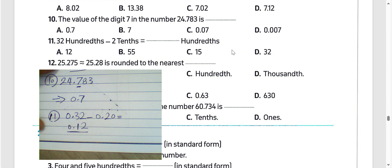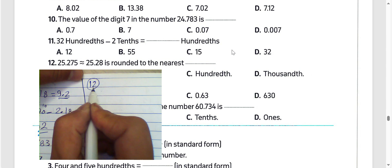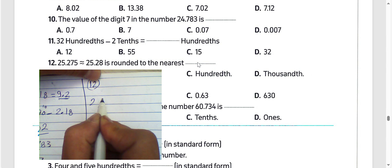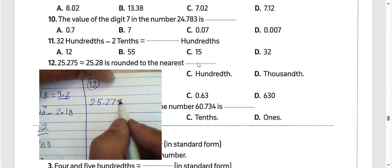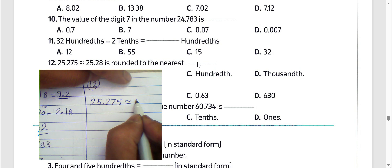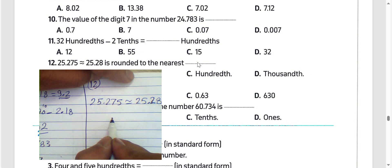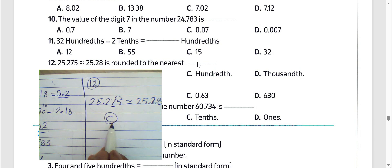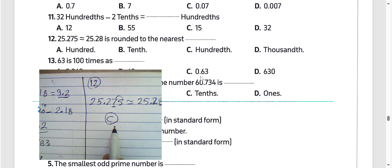Question number 12: we have 25.28 — approximating to the nearest hundredths. The approximation to the nearest hundredths is letter C, because the digit after the hundredths place is 7, which is greater than 5, so we round up.